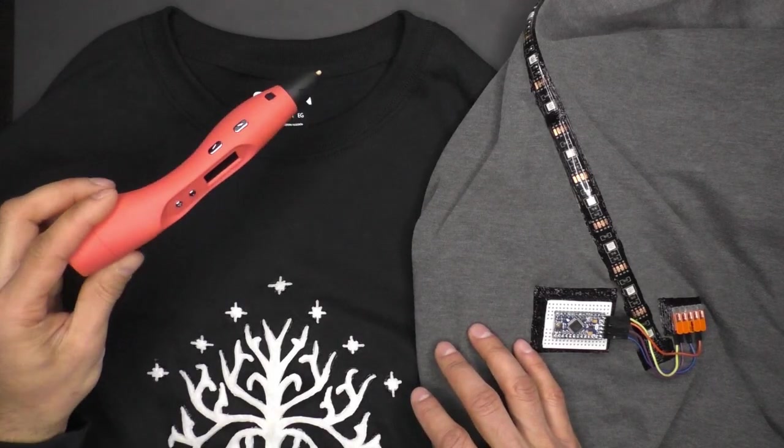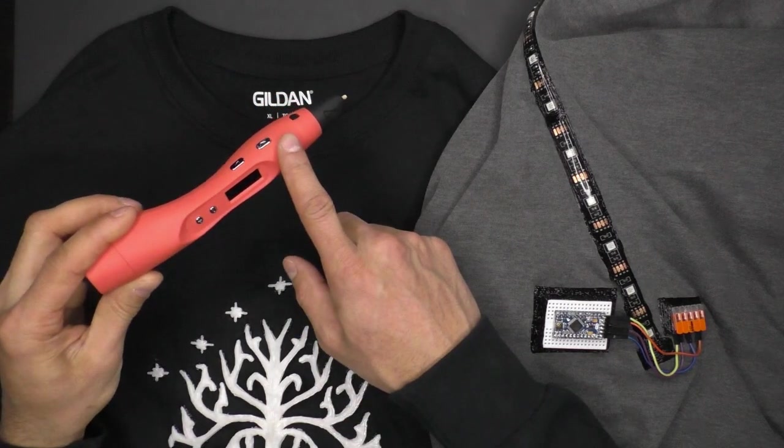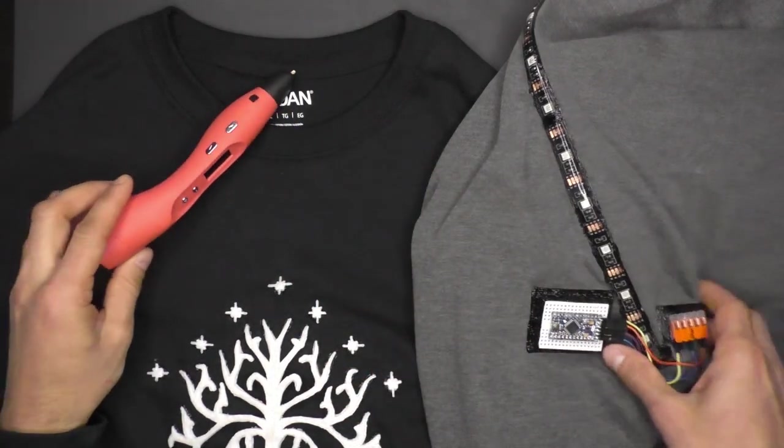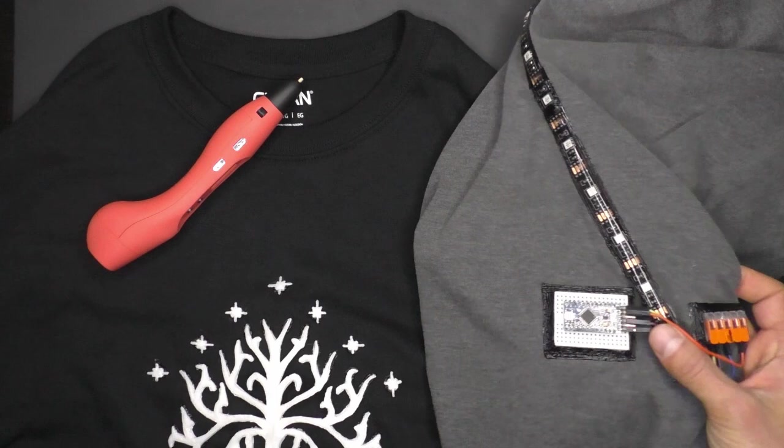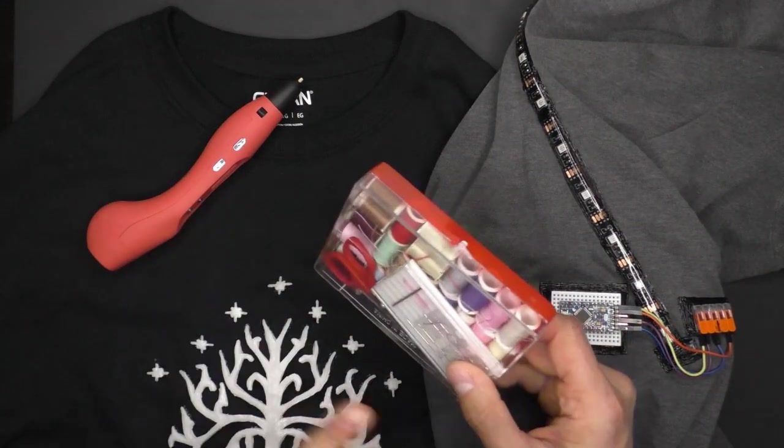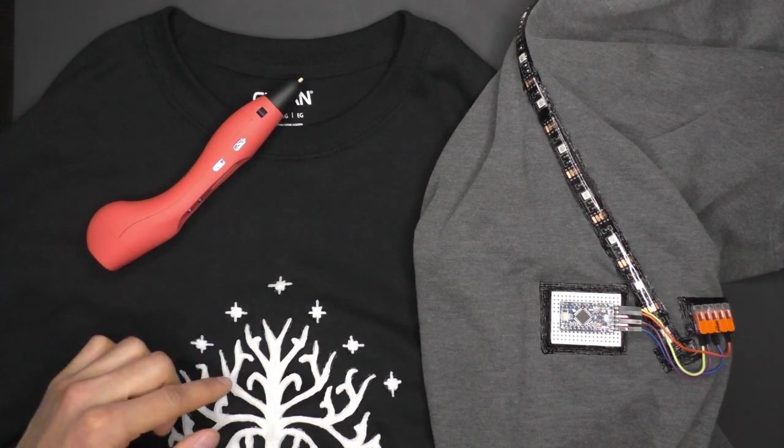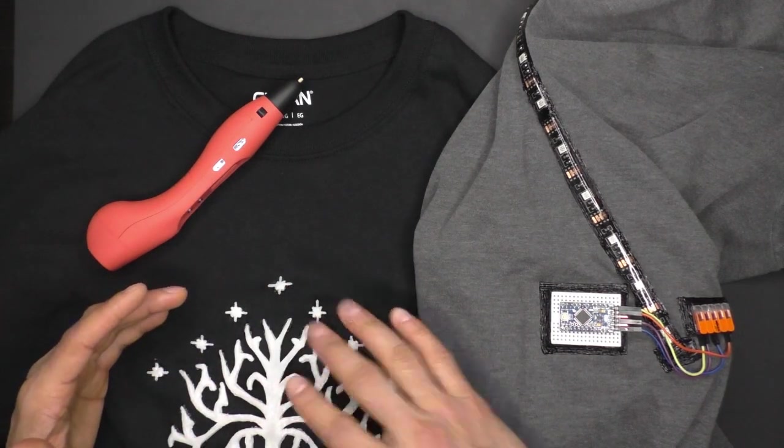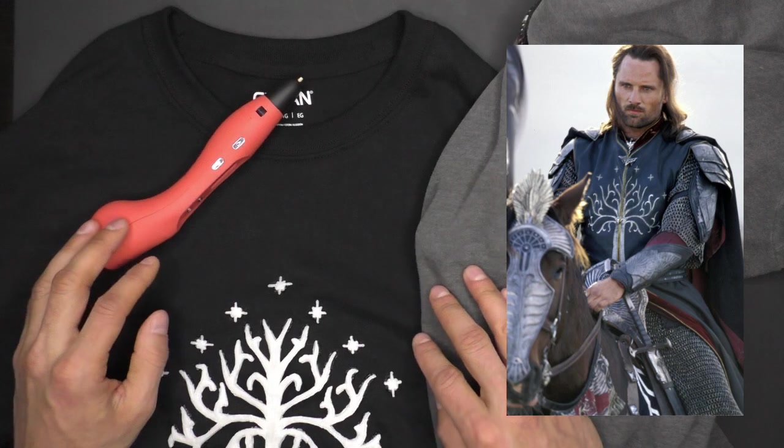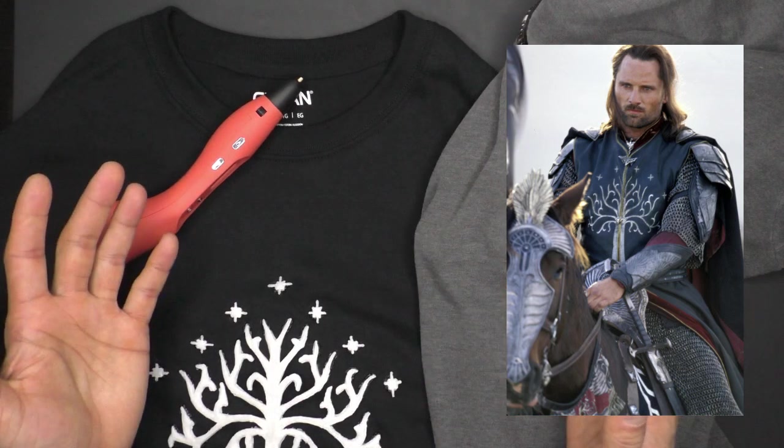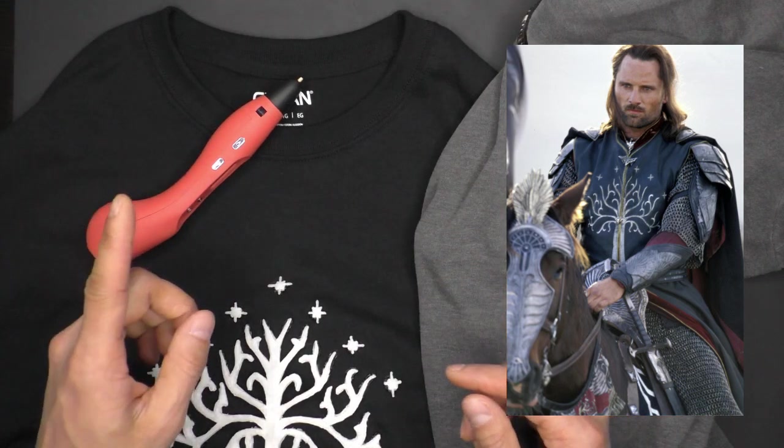I wanted to do a project which shows the full power of combining a 3D pen with wearable electronics. I just want to highlight right up front that this uses no sewing at all, which I think is pretty amazing. For the project, I decided to make a shirt which has a glowing white tree of Gondor from the Lord of the Rings. Why did I choose that specifically? Well, I'm a huge nerd, that's why.